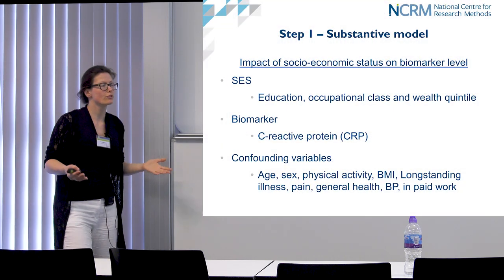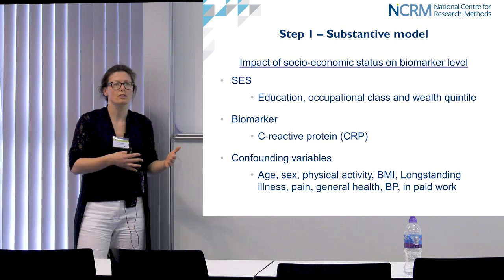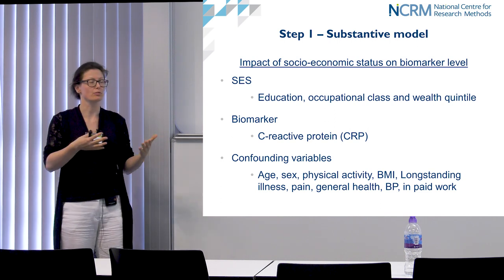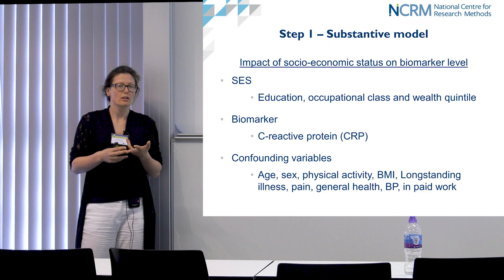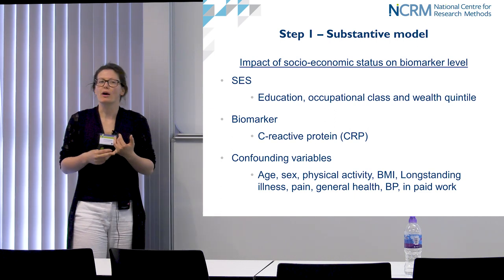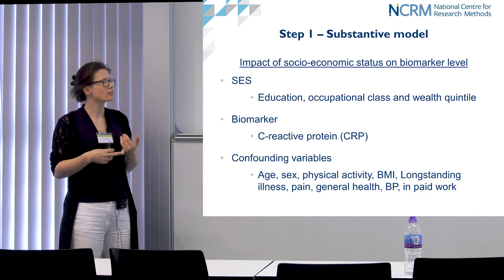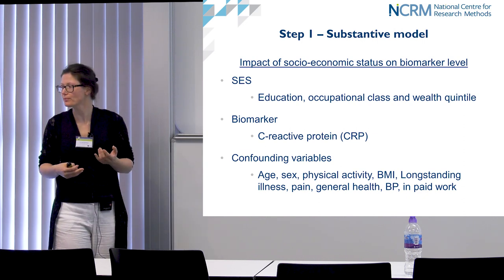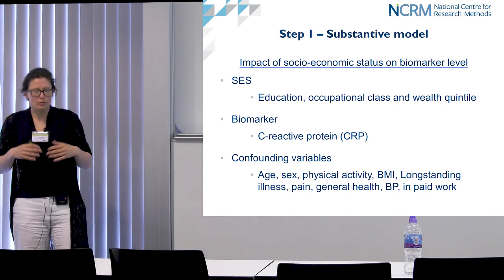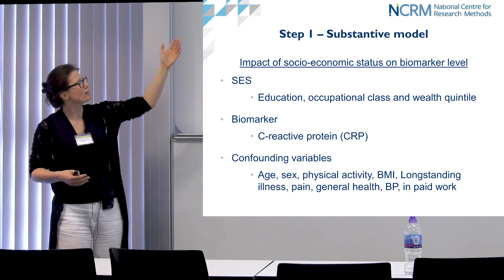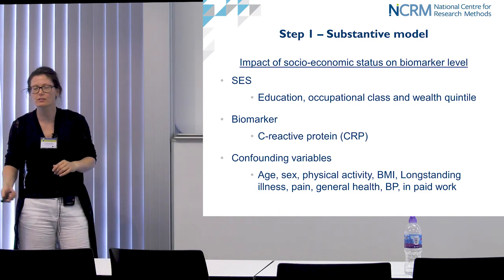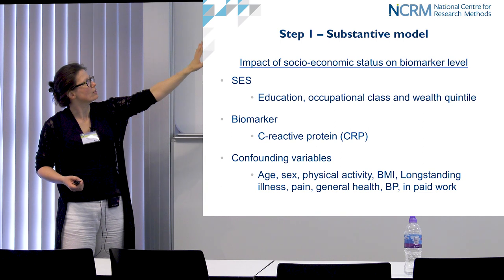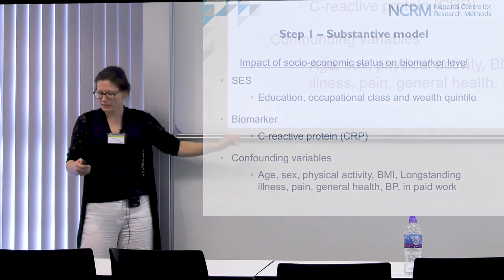For our substantive model we've chosen to examine the relationship between socio-economic status and a biomarker. We look at education, occupation, and wealth quintiles as SES measures. For our biomarker we chose CRP — C-reactive protein in the blood — which is usually a good indicator for chronic inflammation. We reviewed the literature on this kind of substantive model and chose a variety of confounding variables to isolate the effect of socio-economic status on the biomarker.